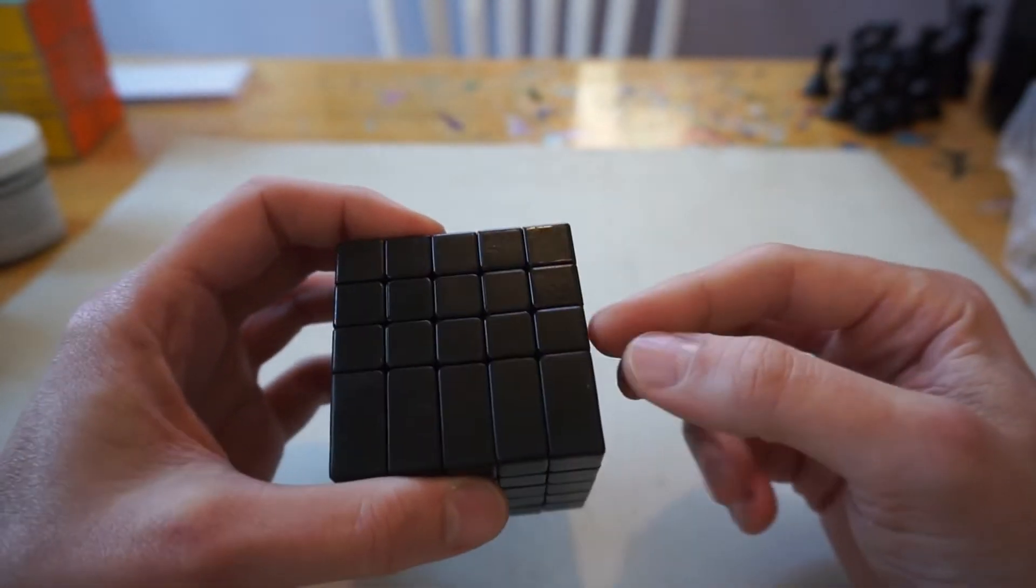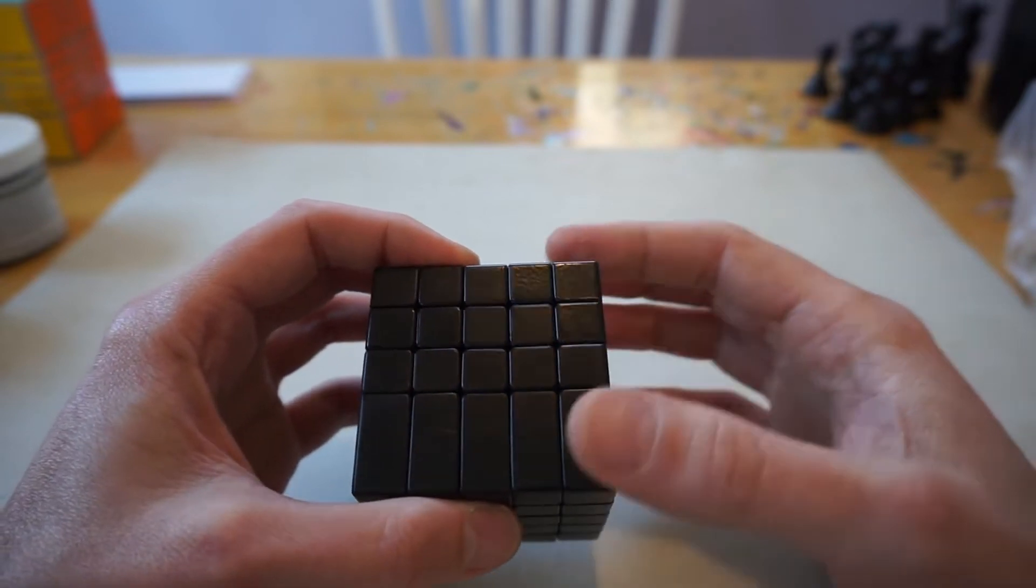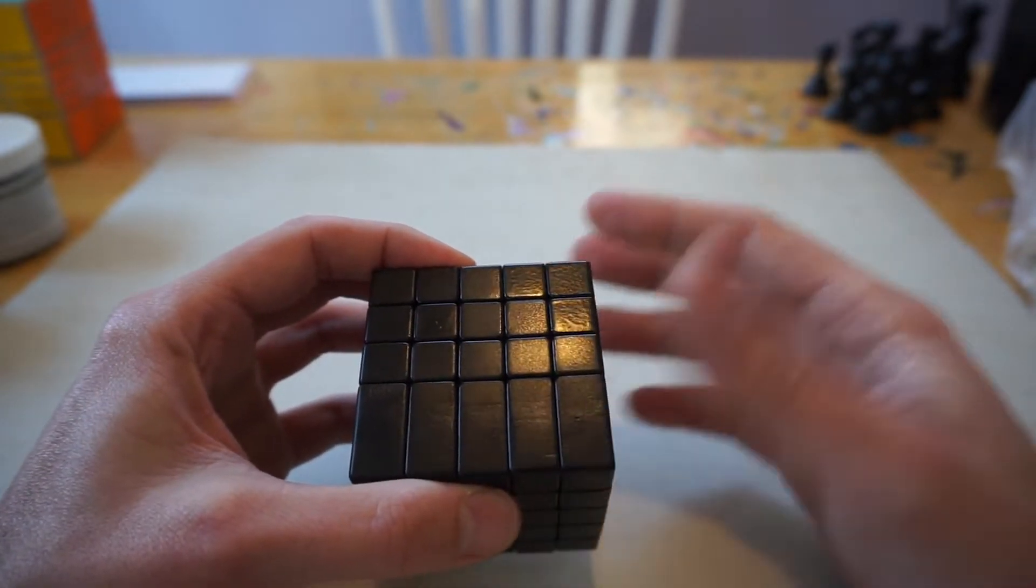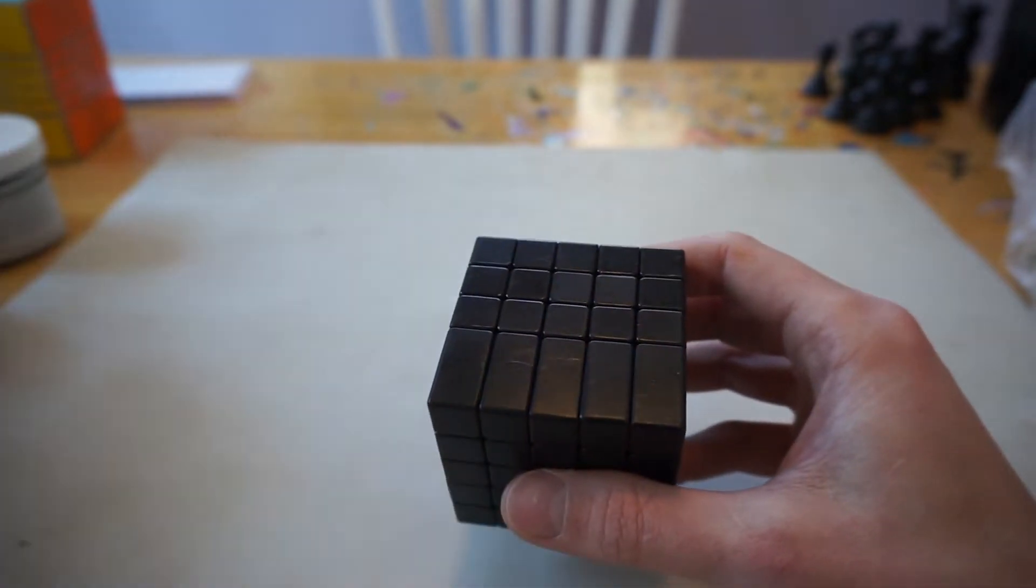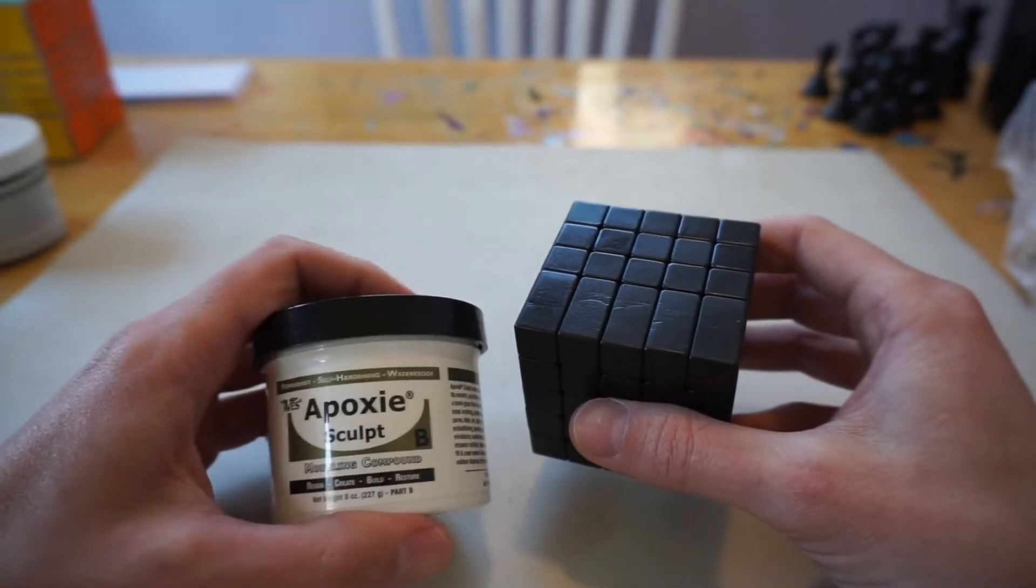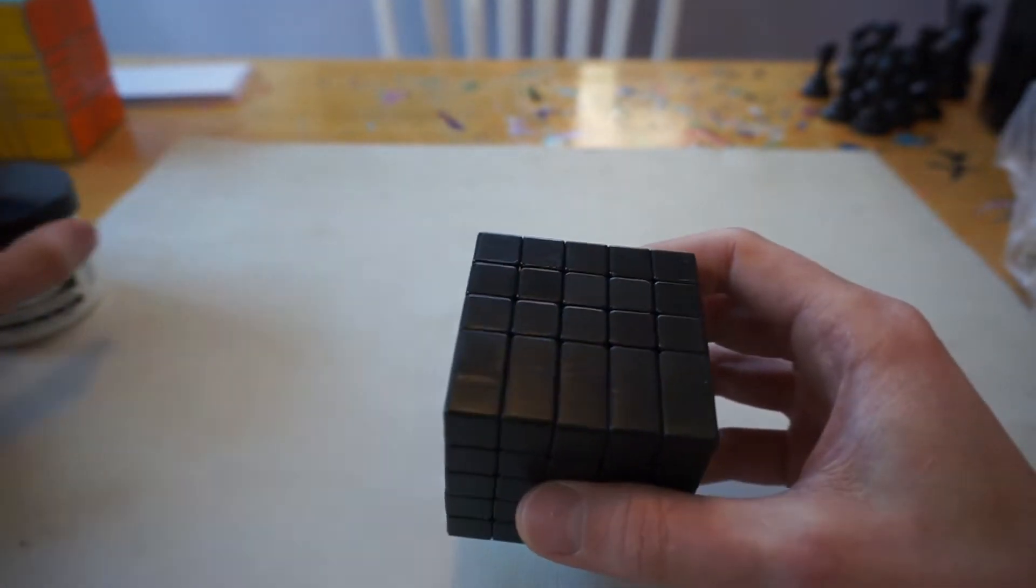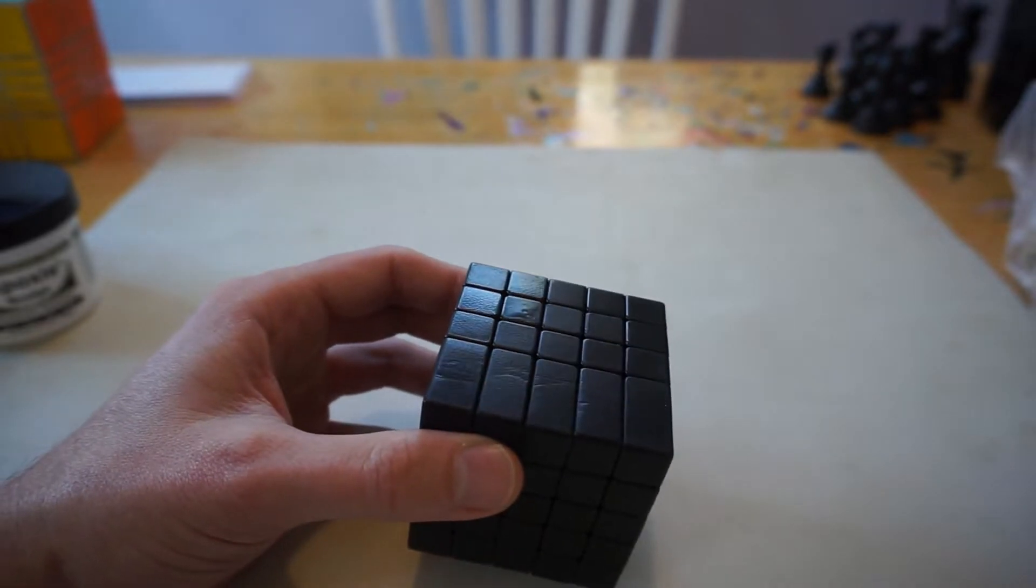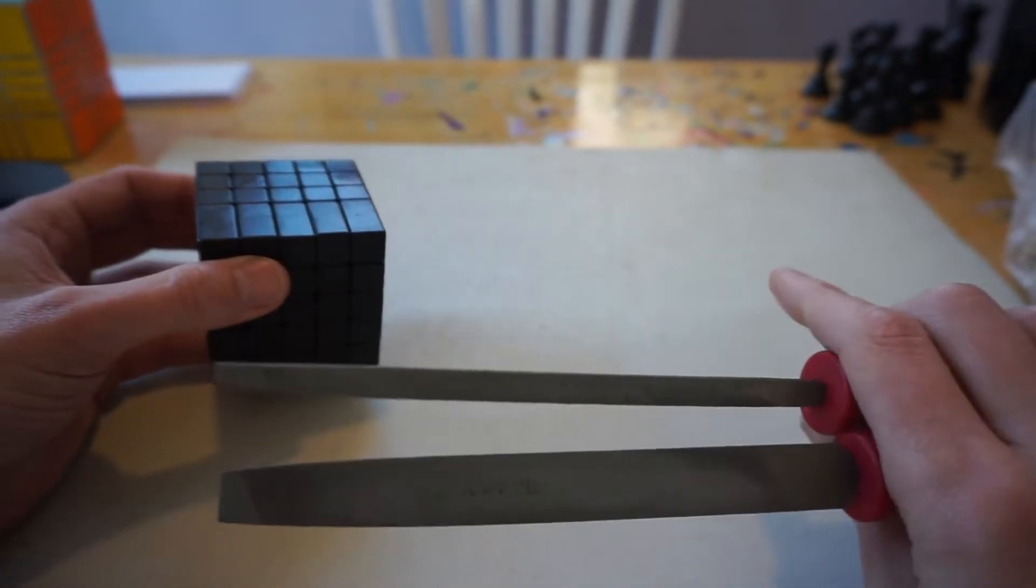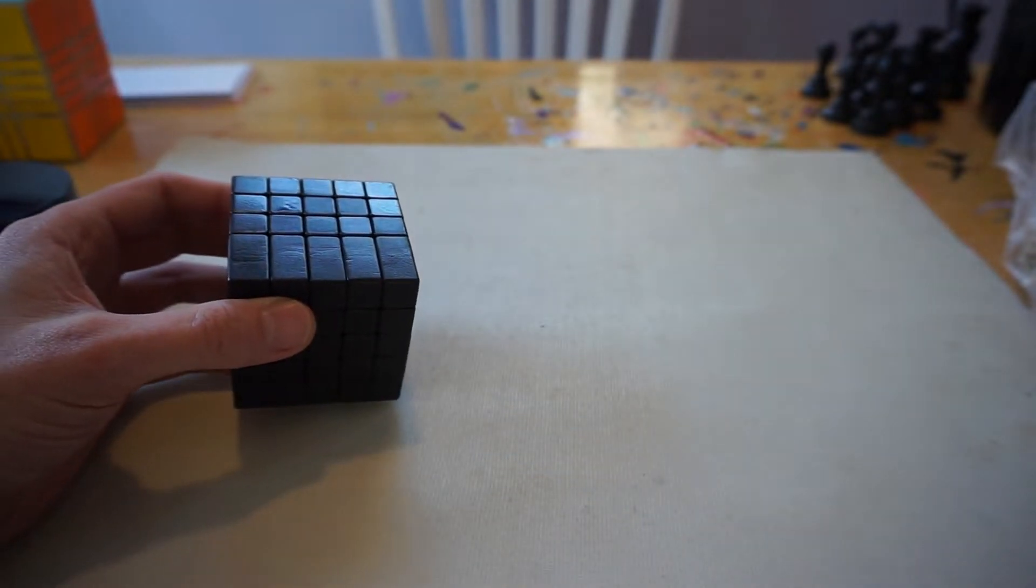Basically I used super glue to bandage two pieces together. I disassembled the puzzle and then I added some more super glue. Once that dried I used epoxy sculpt and I filled in the cracks.